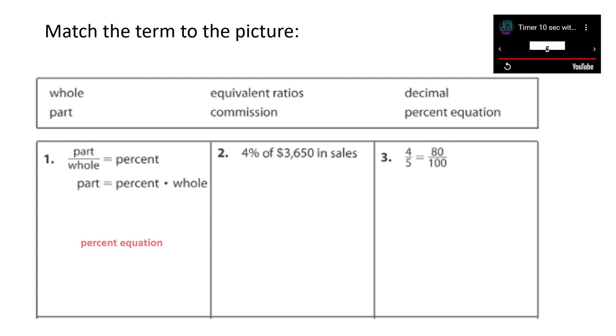So did you answer percent equation for number one? If so, you are correct. Part divided by whole equals percent or part equals percent times the whole. Both are representations of a percent equation. For number two, 4% of $3,650 in sales represents commission, which is incentive pay for salespeople to sell more. So there's the word of, 4% of $3,650. If you look at the percent equation, we can sometimes think of of meaning multiplication. So 4% times $3,650 is what a salesperson would be able to take home as extra pay at the end of a month or a year or whenever.